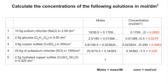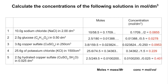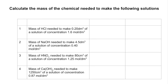Question 5 has a tricky Mr to calculate: copper sulfate pentahydrate has one copper, one sulfur, four oxygens, plus five lots of water (five eighteens), giving an Mr of 249.5. Calculating moles from mass ÷ 249.5, then dividing by the volume, gives a concentration of 0.401 mol/dm³.